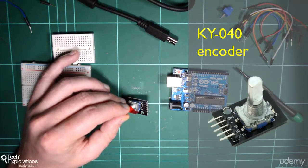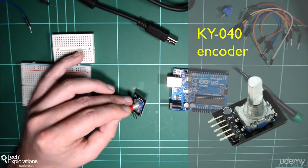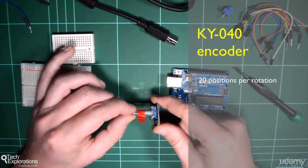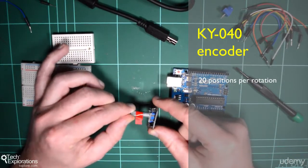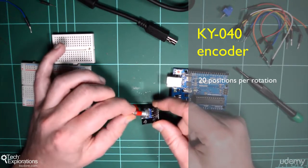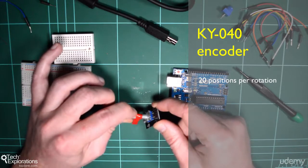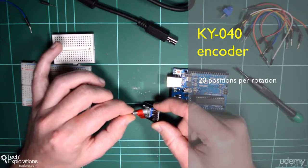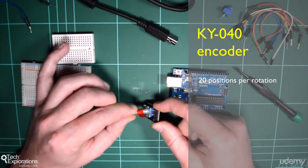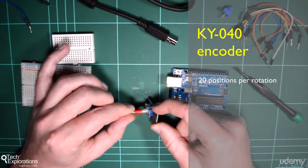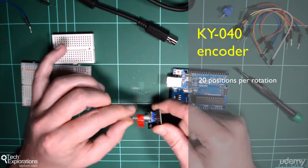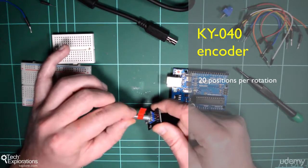A couple of other things worth mentioning is that incremental encoders can be very accurate. The one that I'm holding here, even though it's cheap, has got an accuracy of 20 positions per revolution. So there are 20 positions that I can rotate the knob and those will be reported to my sketch. You can get incremental encoders with accuracy up to maybe a thousand, even 10,000 in some cases, positions per full revolution.